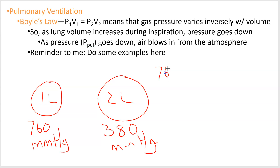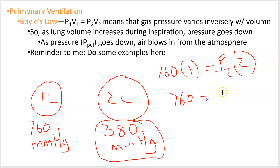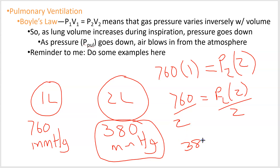Let's verify with the formula. P1 is 760, V1 is one liter, so 760 × 1 = P2 × 2. Dividing both sides by 2 gives P2 = 380 millimeters of mercury. You didn't need that equation to figure it out — if the volume doubles, the pressure is cut in half; if the volume is cut in half, the pressure doubles.